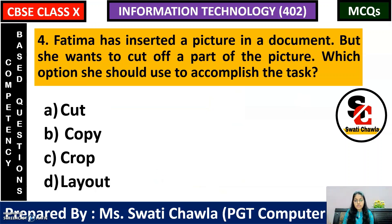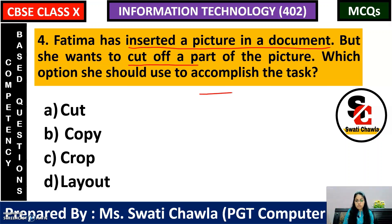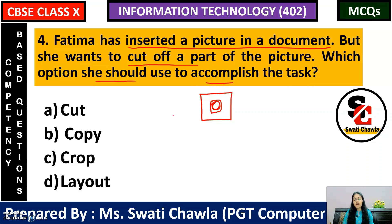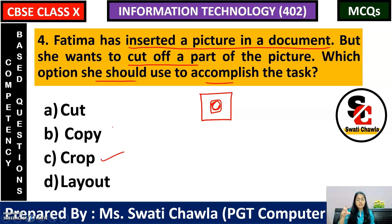Next: Fatima has inserted a picture in a document, but she wants to cut off a part of the picture. Which option should she use? If we use the cut option, the entire image will be cut. But we don't want to cut the entire image — just a part of it. So we will use option C, that is crop. Crop means cutting off the part of the image that you don't need.